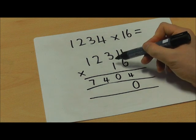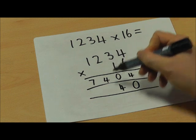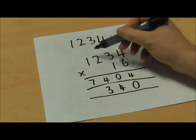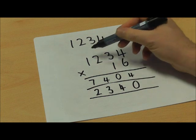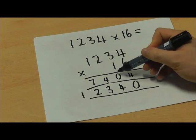So I'm now going to do 4 times 1, which is 4, 3 times 1, which is 3, 2 times 1, which is 2, and 1 times 1, which is 1. I need to be careful to make sure that all of my numbers are lined up in the correct place value columns.